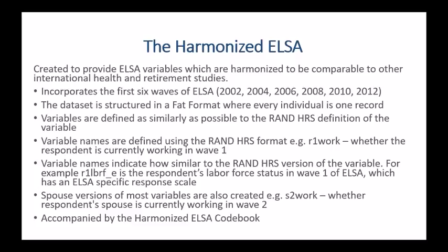The dataset is structured in FAT format — rather than one dataset per wave, the harmonized ELSA is just one dataset where every individual is one record and different wave variables are listed out using a variable naming convention. Variables are defined as similarly as possible to the RAND HRS definition. The RAND HRS is a harmonized, cleaned version of the Health and Retirement Survey conducted in the United States by the University of Michigan — a user-friendly version that approximately 90% of HRS research starts with.